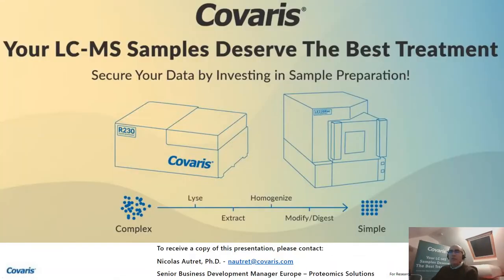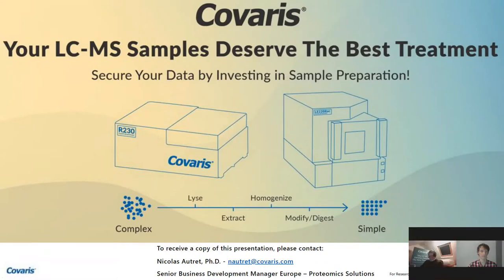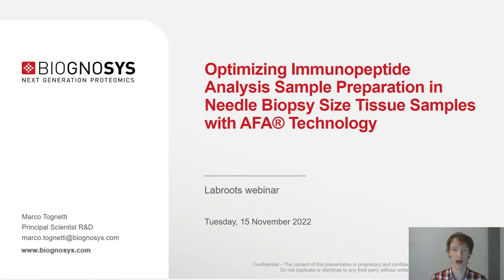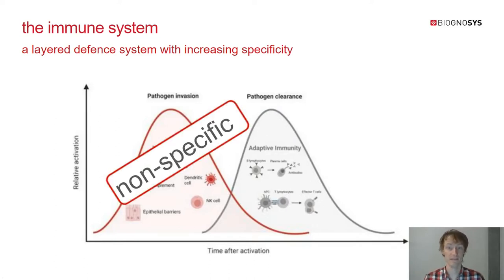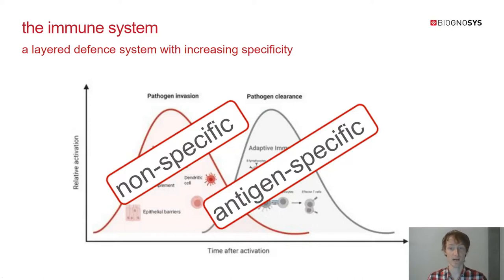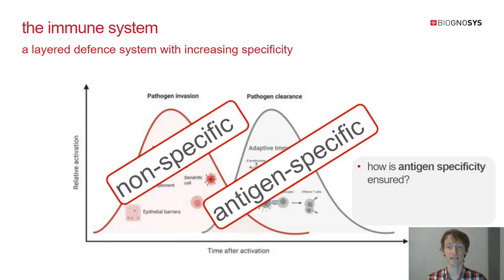Thanks a lot, Nicholas. I'm actually very excited to have the opportunity to talk to you about how we apply AFA technology to optimize and improve our immunopeptidomics pipeline. The immune system is a layered defense system with increasing specificity. The first layer of defense is the innate immunity, which has physical components such as the skin, chemical and cellular components, and these target pathogens in a nonspecific manner.